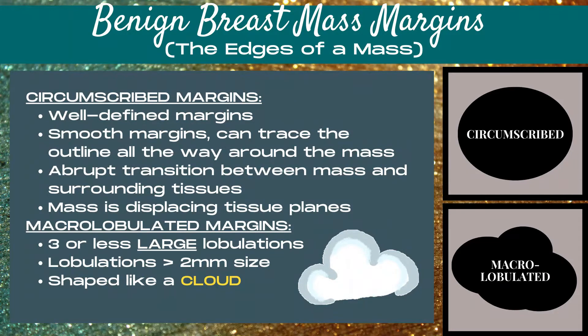The margins or edges of a breast mass are our next characterizing feature. First, let's talk benign breast mass margins. Circumscribed margins are well-defined, smooth margins. You can trace the outline of the margin all the way around the mass, and there's an abrupt transition between the mass and the surrounding tissues, making it clear that the mass is displacing the tissue planes.